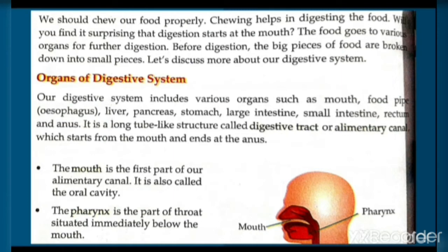Our digestive system includes various organs such as mouth, food pipe, liver, pancreas, stomach, large intestine, small intestine, rectum, and anus.